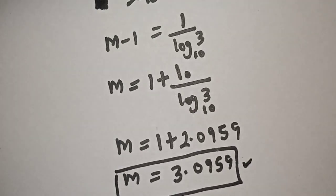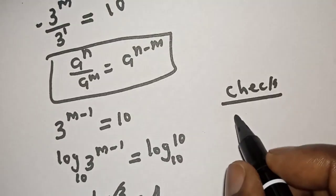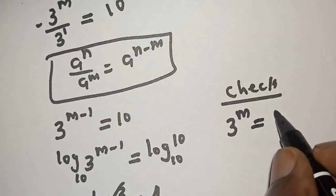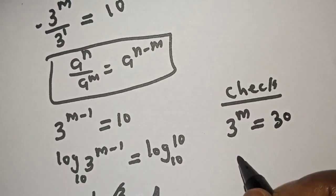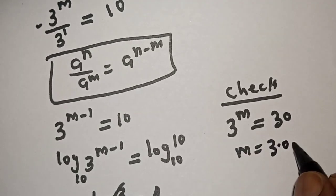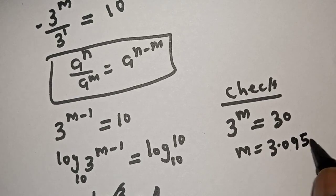We can check to confirm if our answer is right or wrong. Let's check. We have the given equation 3 raised to power m is equal to 30, m is equal to 3.0959.